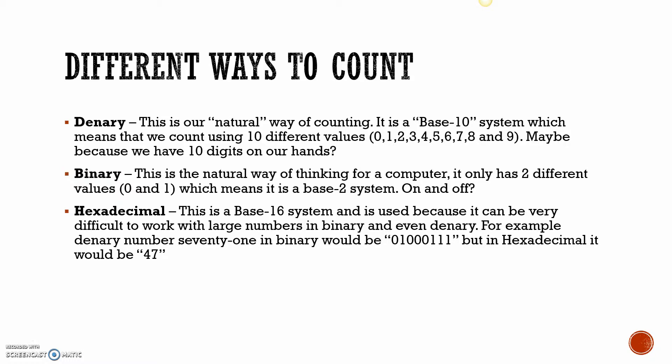Now hexadecimal is a base 16 system, and it's used because it can be very difficult to work out large numbers in binary and even denary. For example, the denary number 71 would translate to 0100111 in binary. But in hexadecimal, it's simply represented as 47. With base 16, after the 9 we use letters to represent the further numbers: A, B, C, D, E, and F. So the idea is that to represent 10, it's simply the letter A. All will become clear, hopefully.